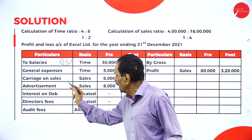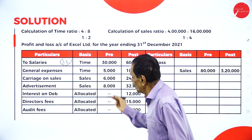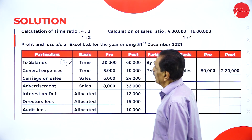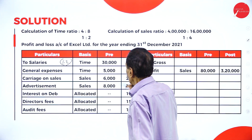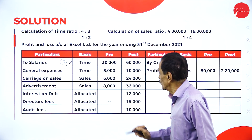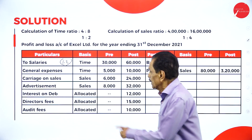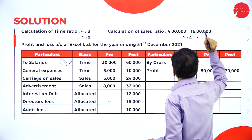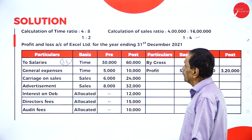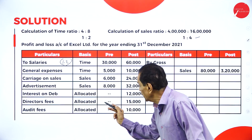Carriage on sales is based on sales ratio. Total carriage is 30,000. Sales ratio is 1 to 4, so one-fifth of 30,000 is 6,000 goes to pre-incorporation; four-fifths, which is 24,000, goes to post-incorporation. Advertisement is also based on sales ratio 1 to 4: pre-incorporation gets 8,000 and post-incorporation gets 32,000.